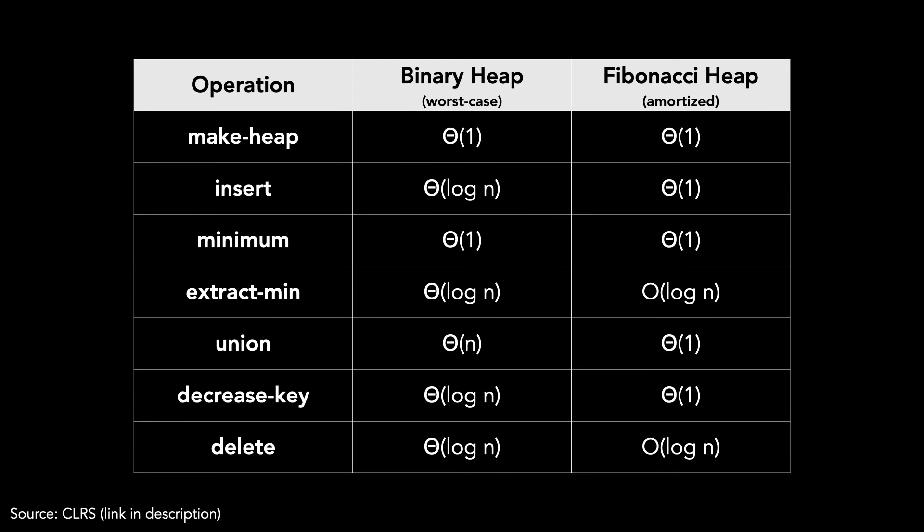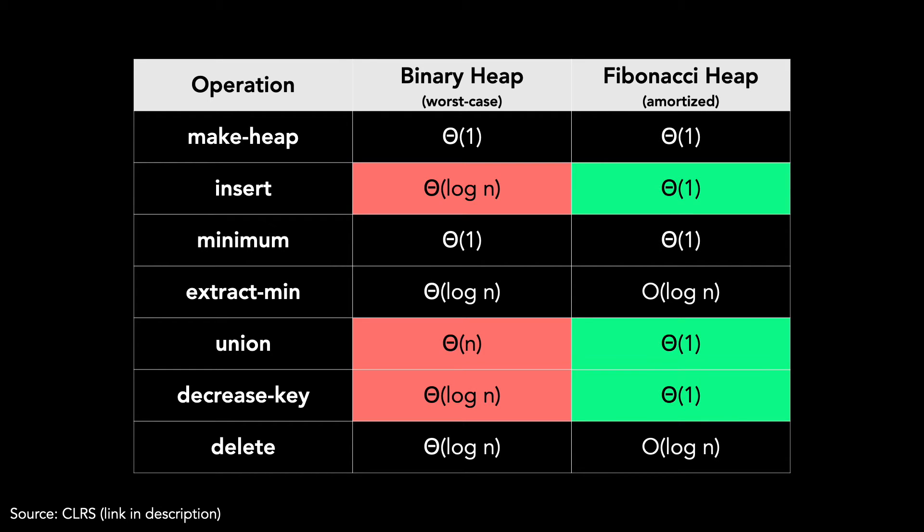Here are the running times for various operations. You'll notice that Fibonacci heaps are advantageous for insert, union, and decrease key. I'll give you a second to review this table. Please pause the video if you need more time.